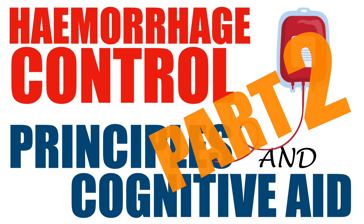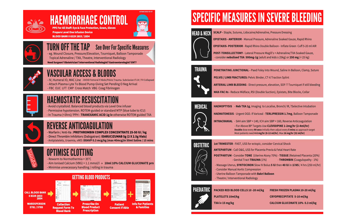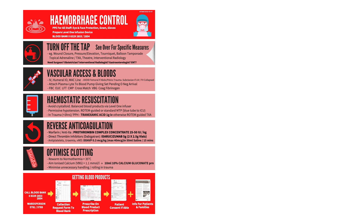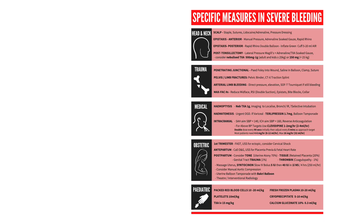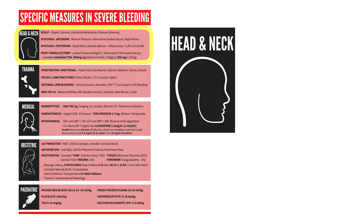This is part two of how to stop your patient bleeding to death. When dealing with a bleeding patient, there are so many things to remember, some of which need to be done all at once by your team. I like to use a cognitive aid — a quick reference guide — and this is the one from our emergency department. In the last video I went through page one, which covers the general measures. Now we're going to talk about the specific measures on page two, depending on the site and nature of hemorrhage, starting with the head and neck region.